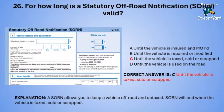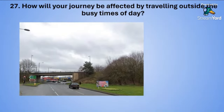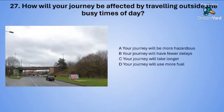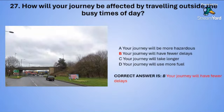Question twenty-seven: How will your journey be affected by travelling outside the busy times of day? A: your journey will be more hazardous. B: your journey will have fewer delays. C: your journey will take longer. Or D: your journey will use more fuel. The correct answer is B — your journey will have fewer delays.